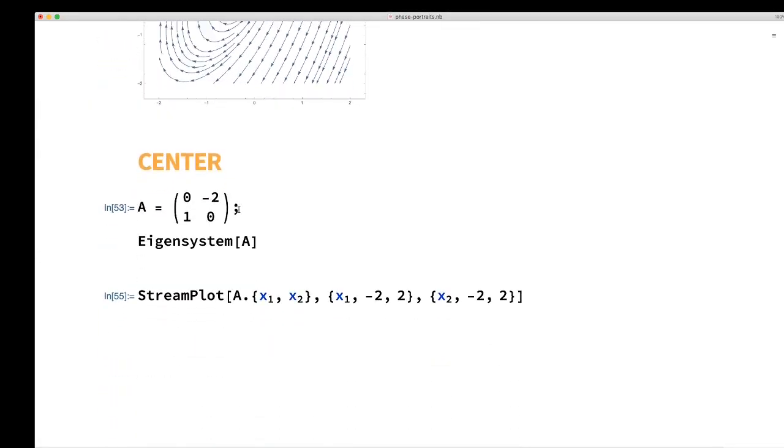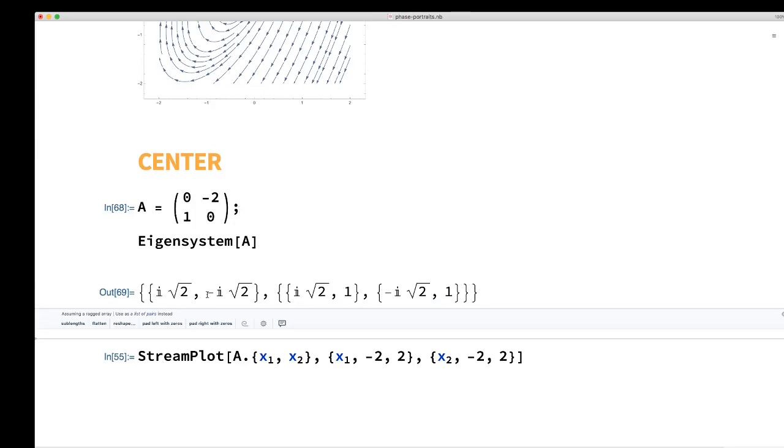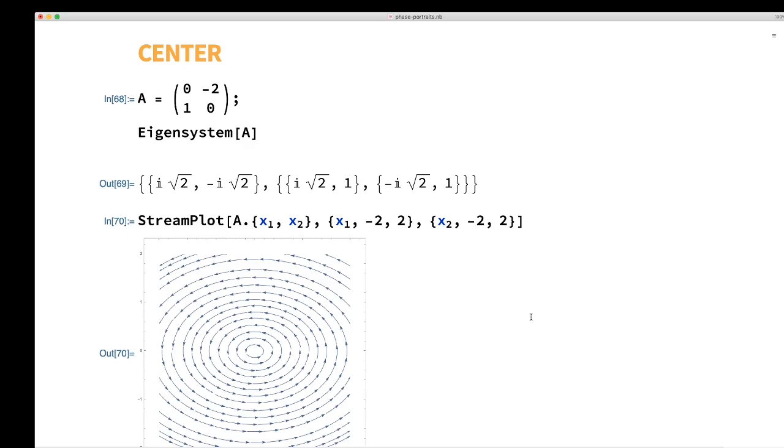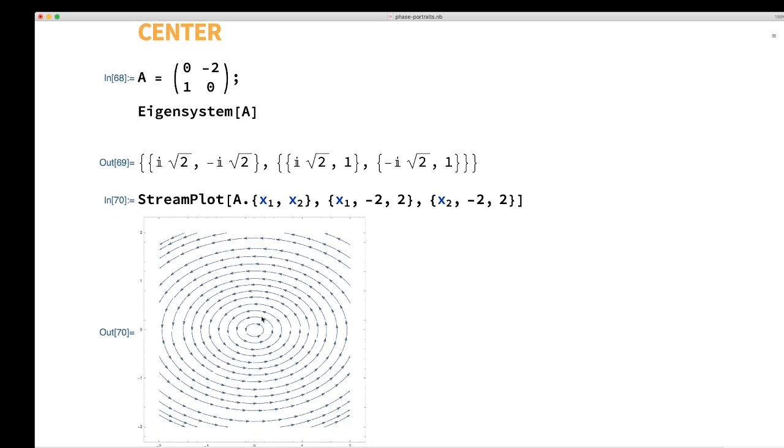And then the special case where the eigenvalues are purely imaginary. That's called a center. In that case, the orbits, we often call them, or the trajectories, will be closed.